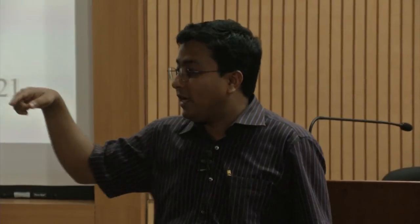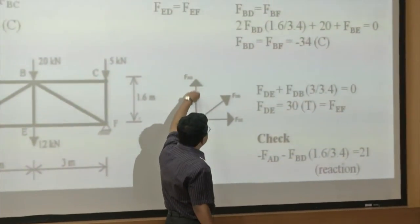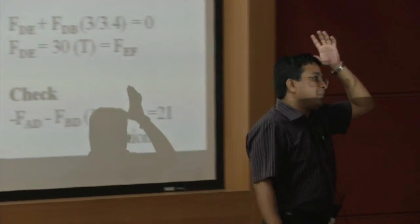A student asks: when analyzing joint D, do we need to show FAD as compressive? We already confirmed FAD is compressive from the earlier free body diagram. We can carry either the sign or change the direction in each step. If we assume all forces tensile initially, a positive answer means tensile and negative means compressive. We can carry forward the sign convention or reverse the direction — either approach is valid as long as we are consistent.